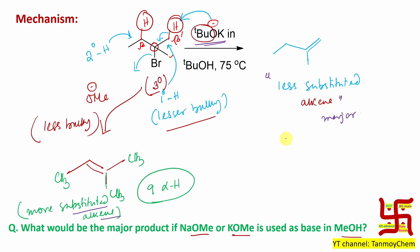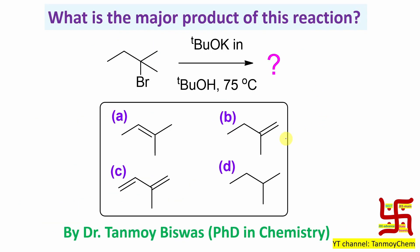So I guess you understood this concept clearly. So what is the major product of this reaction? Obviously in this case it will be option B. Now if this question appears in your exam, in less than 30 seconds, how can you get it? Potassium tertiary butoxide is a very bulky base, so nucleophilic substitution is not possible. And it will abstract the proton from the less bulky side. So directly, answer B.